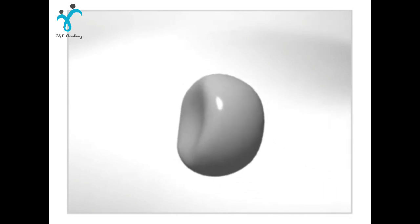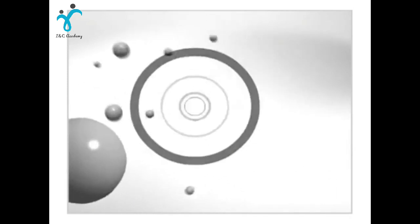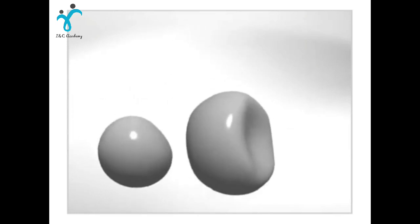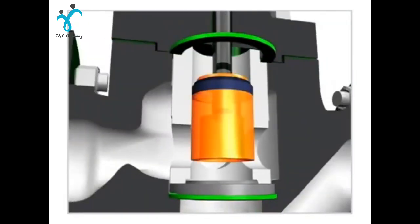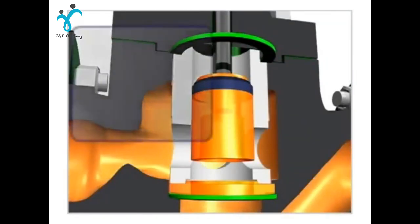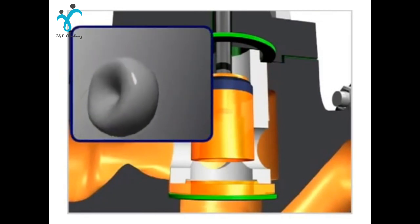These implosions can also cause local pressure waves of up to 100,000 pounds per square inch. The combination of pressure waves and microjets can cause severe damage to the valve plug, seat and body when they're located near the material surface.